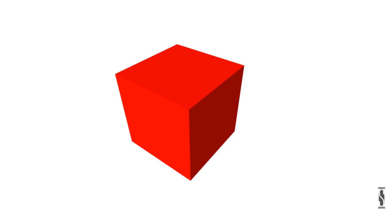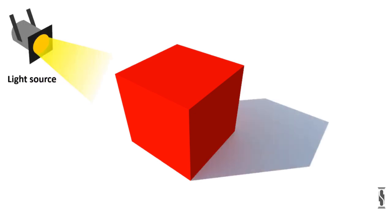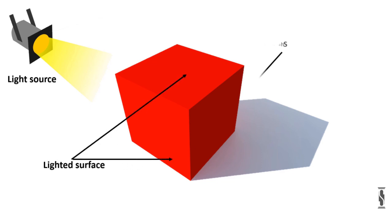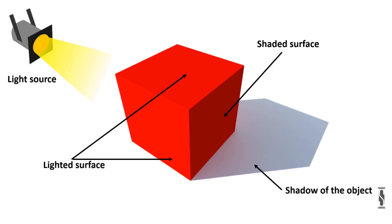Now consider a light source throwing light on an object. The portion or surface on which light is falling is known as the lighted surface, and the portion or surface which is not receiving direct light from the light source is known as the shaded surface. The dark area where light from a light source is blocked by the object is known as the shadow of the object.